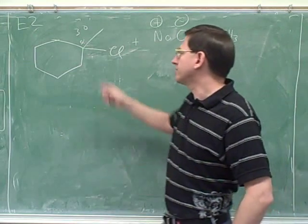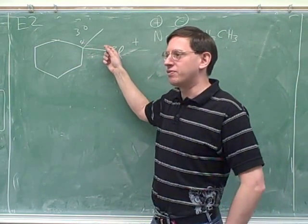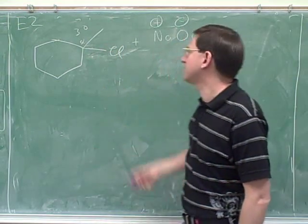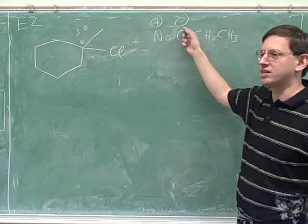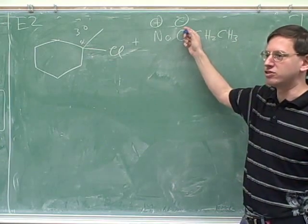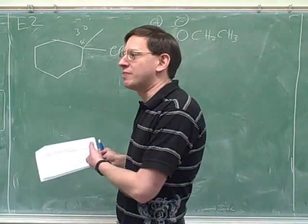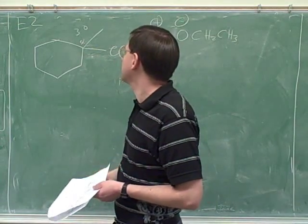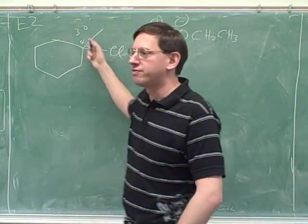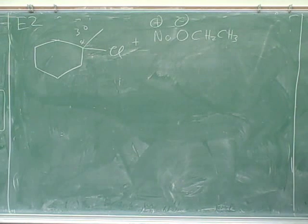For an SN1 or E1, we'd have to wait for the leaving group to leave. But this is a very strong base. It's not going to wait. It's going to come barging in and kick the leaving group off. This is a good example why it's a good idea to get in the habit of using a table like this, because substitution is not the only factor that can matter for what mechanism is going to happen. It's important, but it's not the only factor. OK, so this would be E2.